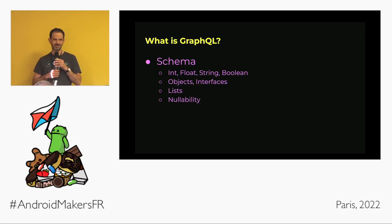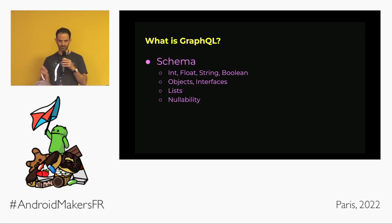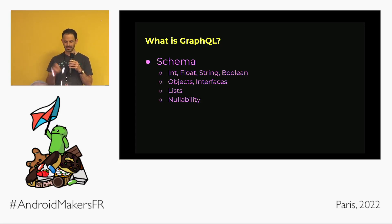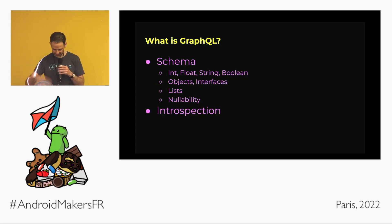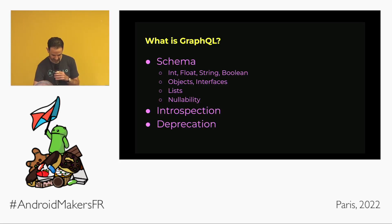You can do the full polymorphic dance in GraphQL with lists and nullability, which appeals a lot to the Kotlin developer. You have nullability built into your backend, so you know for sure when you're using a field in your UI whether it's null or non-null. It also has properties like introspection and deprecation.